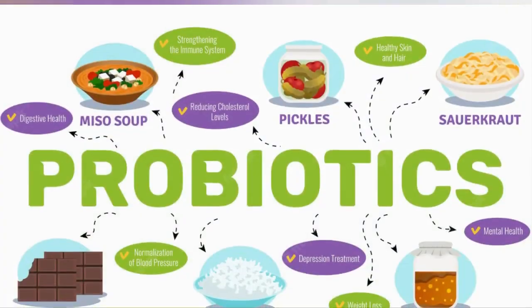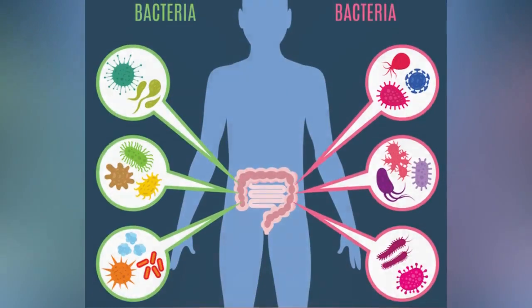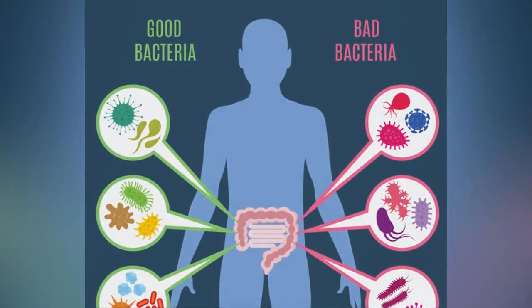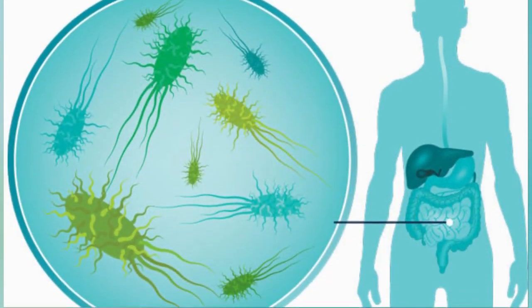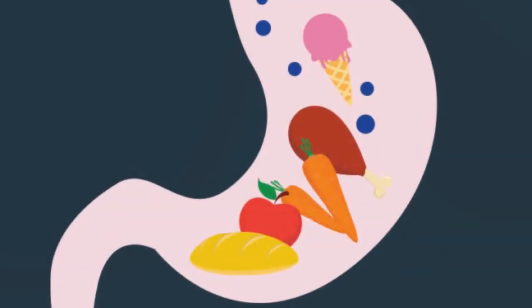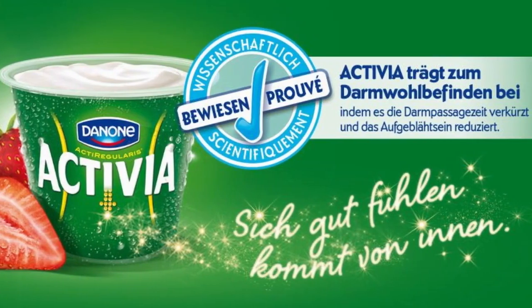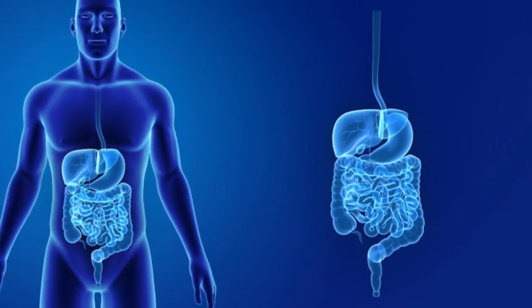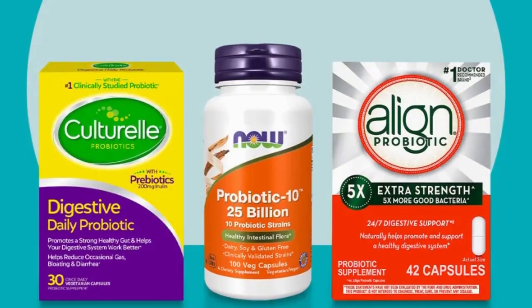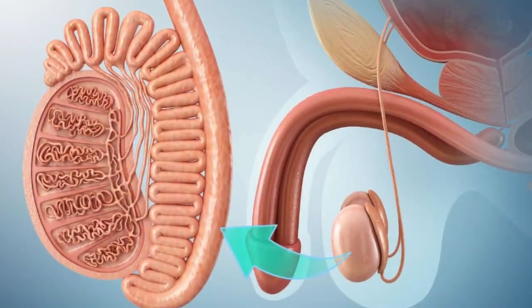You've heard of probiotics by now, probably in the context of fixing your gut flora. This flora is the bacteria living in your intestines that help you break down and process food. Yogurts like Activia advertise their value for digestive health, but some probiotics can also help with testicular function.